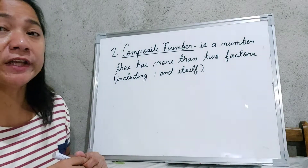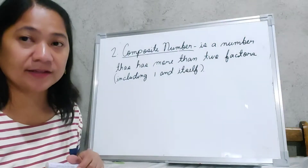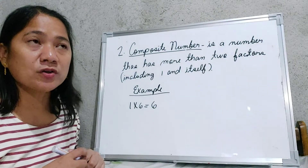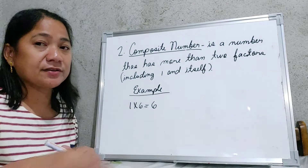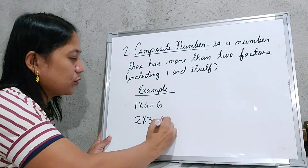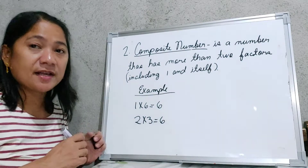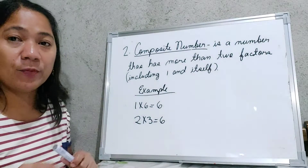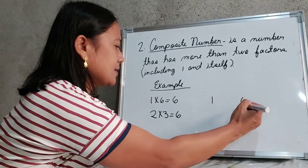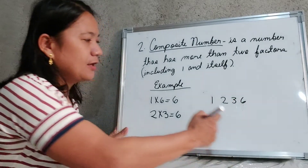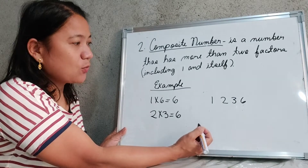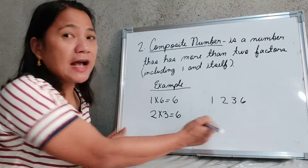The second classification of a natural number is the composite number. A composite number is a number that has more than two factors, including 1 and itself. For example, number 6 is a composite number because aside from 1 and 6, we can also use 2 and 3, since 2 times 3 equals 6. So the factors of 6 are 1, 2, 3, and 6. Remember to write the factors in ascending order.